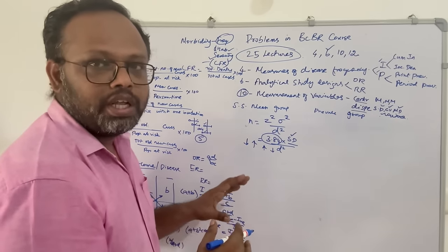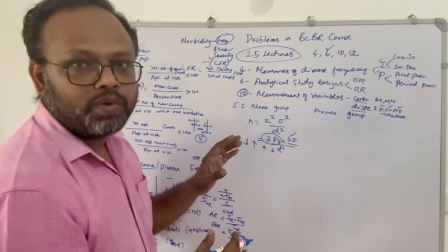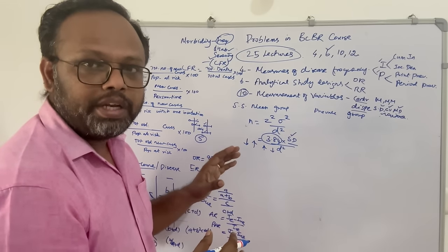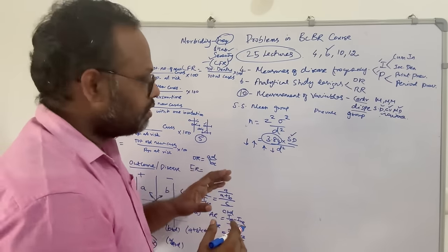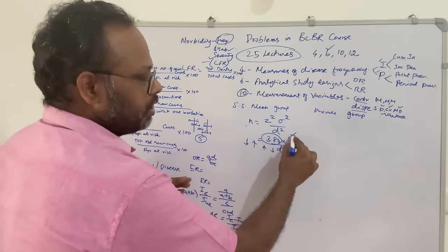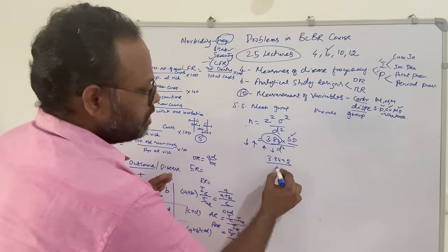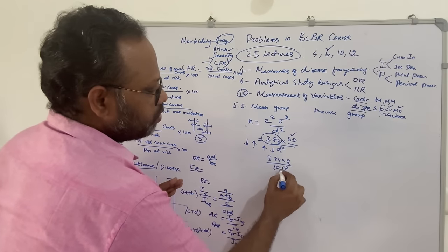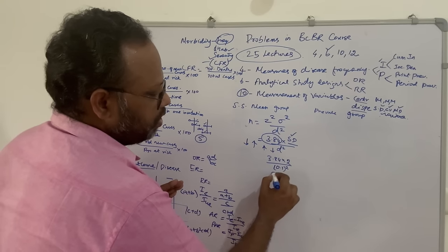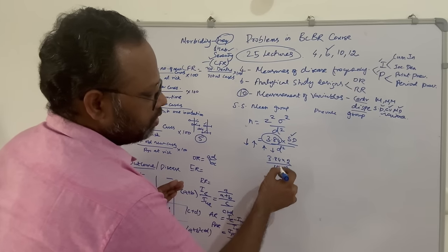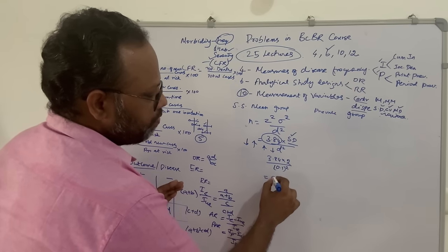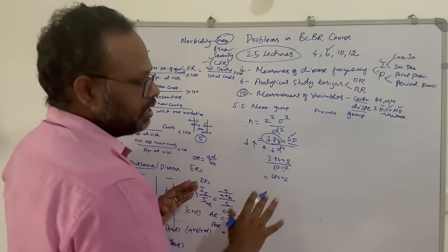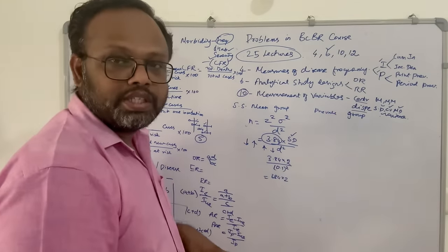In any problem, you need to look at the standard deviation — z² is always constant at 3.84 and the standard deviation is substituted for σ, then d is decided. For example, if the standard deviation of hemoglobin is 2 and precision d is 0.1, then d² = 0.01 and n = 3.84 × 4 / 0.01, giving the required sample size.